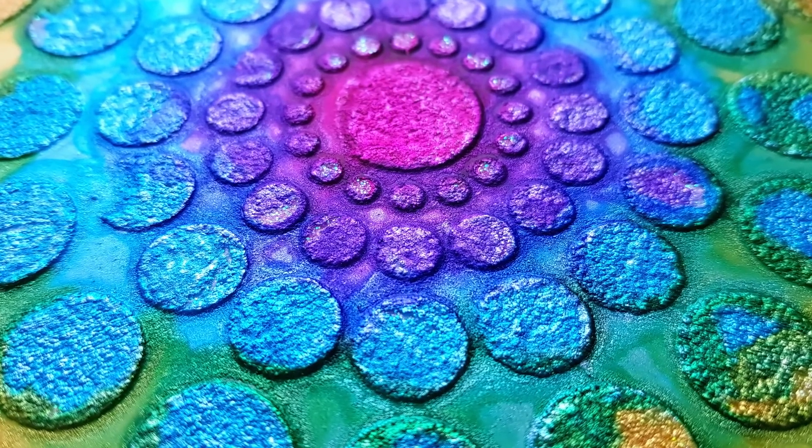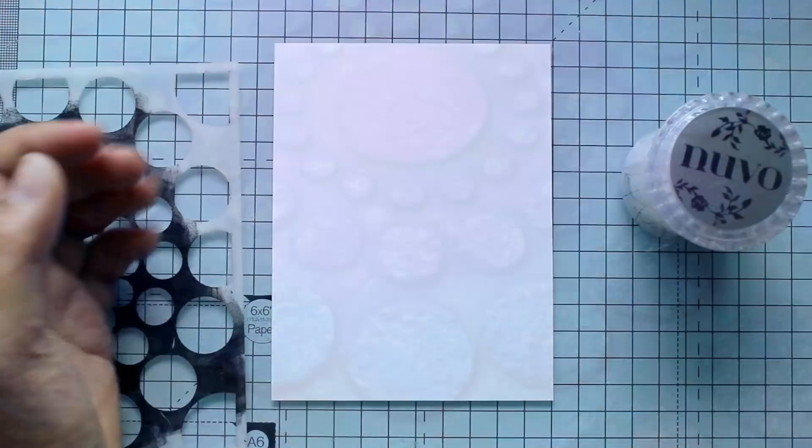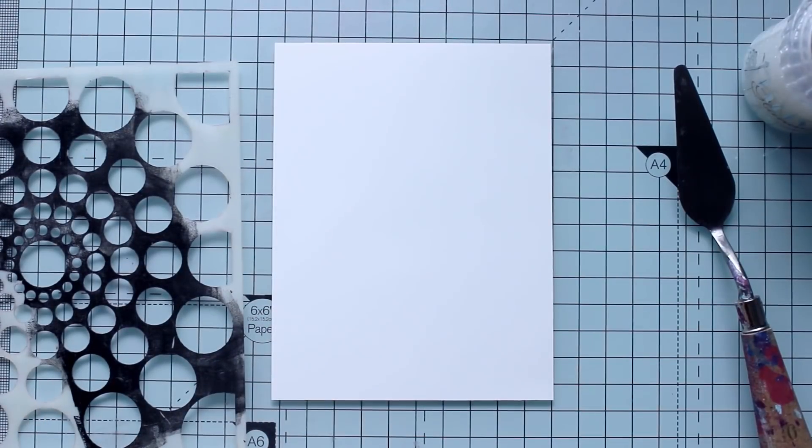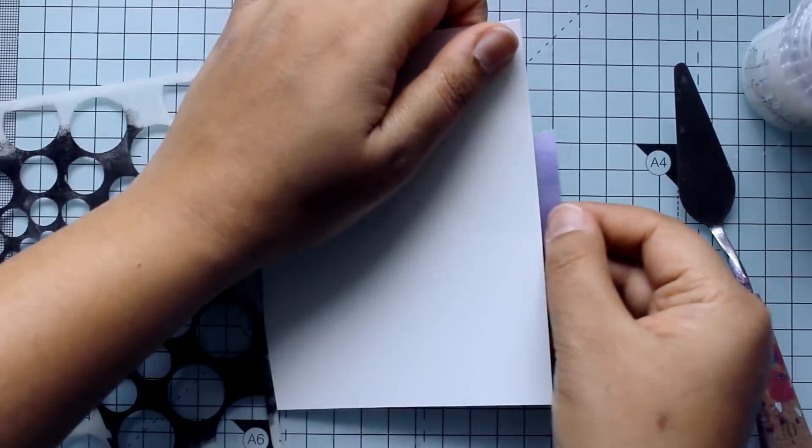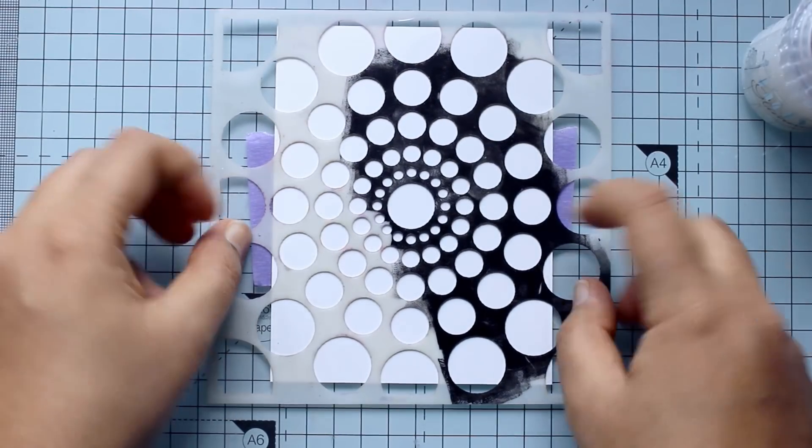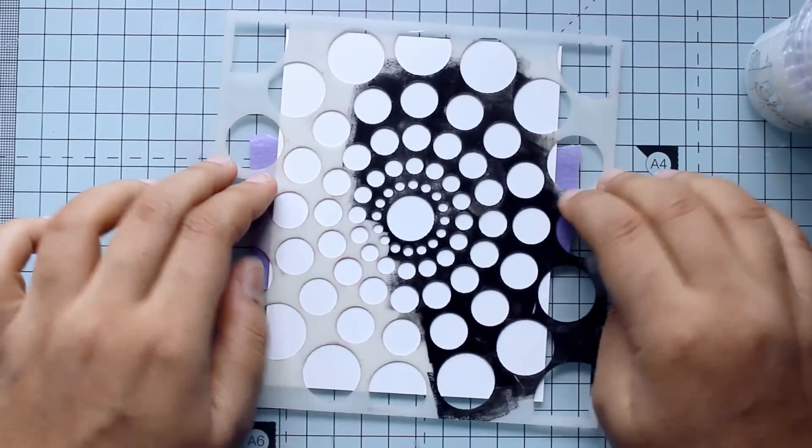Today I am going to be showing you how to get this gorgeous textured effect using Ranger Alcohol Pearls and some Nouveau Tonic Glimmer Paste in the shade Moonstone.